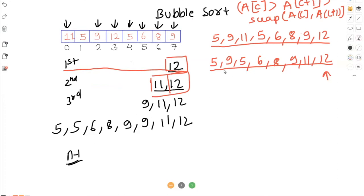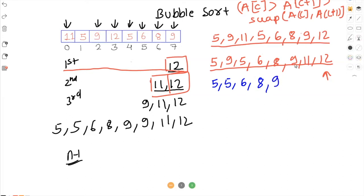Now for the third iteration, going a bit quicker: 5 compared with 9 — no swap. Then 9 and 5 compared — 5 comes here, 9 next. Then 9 and 6 — 9 is greater, so 6 comes here, 9 here. Then 9 and 8 — 9 is greater, so 8 comes here, 9 here. Then 9 and 9 — both same, no swap. Then 9 and 11 — next element is greater, no swap. Then 11 and 12 — no swap. So in the third iteration we got 9, 11, and 12 at the end.